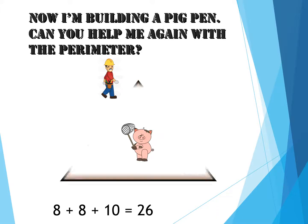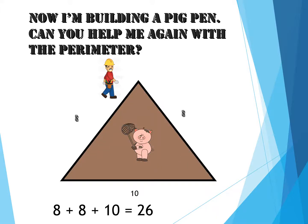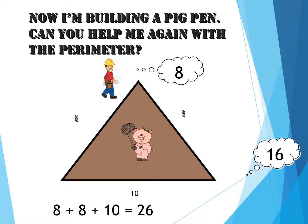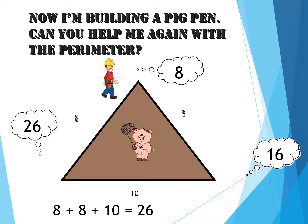I need your help again. I'm building a pig pen — can you help me with the perimeter? This is a triangular pig pen. Two sides measure eight centimeters and one side measures ten centimeters. So I add eight plus eight, which is 16, plus ten more, which is 26. Therefore, the perimeter is 26. Eight plus eight plus ten is 26.